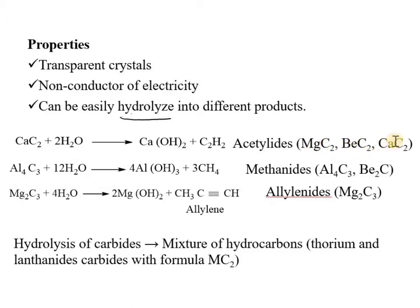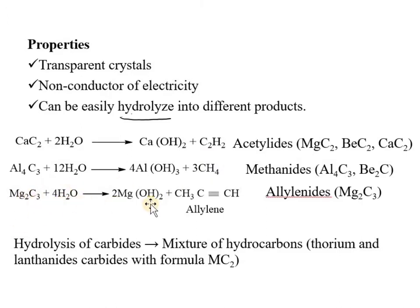These are the second-group or third-group elements which form salt-like carbides. The hydrolysis is very important and divides carbides into different types: carbides that hydrolyze to give acetylene, carbides that hydrolyze to give methane, carbides that hydrolyze to give allylene, and one group of carbides that hydrolyzes to give a mixture of hydrocarbons — these are the MC₂ type carbides.